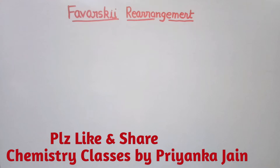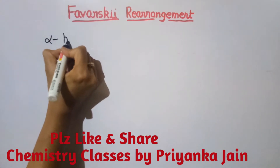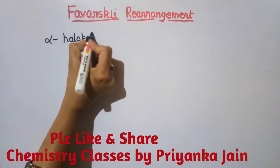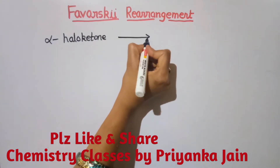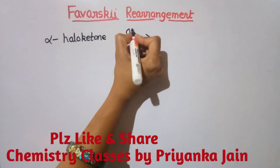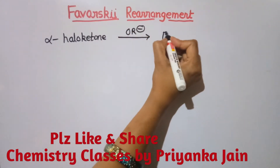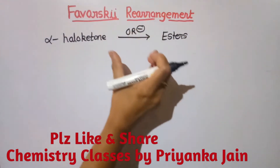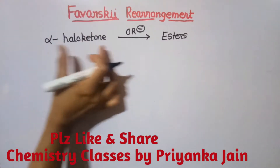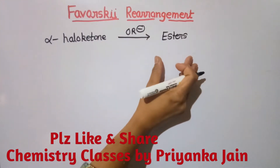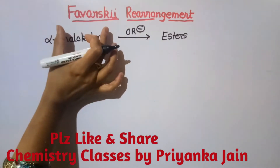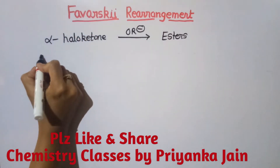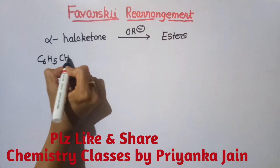Welcome to chemistry class. Here we are studying about a very important name reaction — Favorsky rearrangement. If we have alpha haloketones and when they are treated with alkoxides, meaning OR minus ions, then we get the corresponding esters with a rearranged skeleton. The conversion of alpha haloketones to corresponding esters with rearranged carbon skeleton in the presence of alkoxides is known as Favorsky rearrangement.